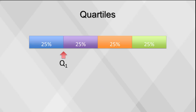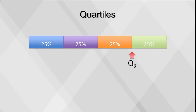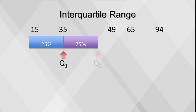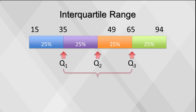The interquartile range is the difference between the value at the third quartile minus the value at the first quartile. Q1 is the value for which 25% of the observations are smaller and 75% are larger. Q2 is the same as the median — 50% are smaller and 50% are larger. Only 25% of the observations are greater than the third quartile. For the age values 15, 35, 49, 65, and 94, the first quartile is at 35, meaning 25% of participants are below age 35. The interquartile range is 65 minus 35 equals 30 years.